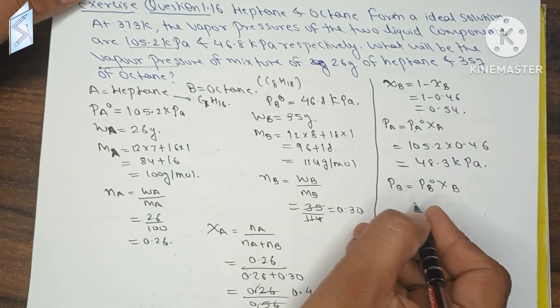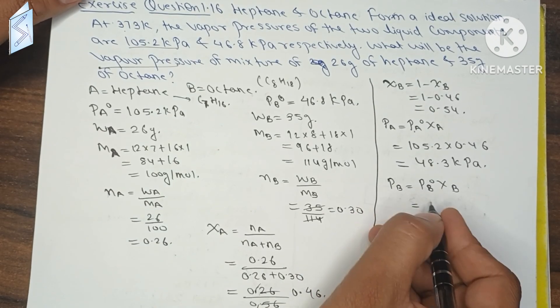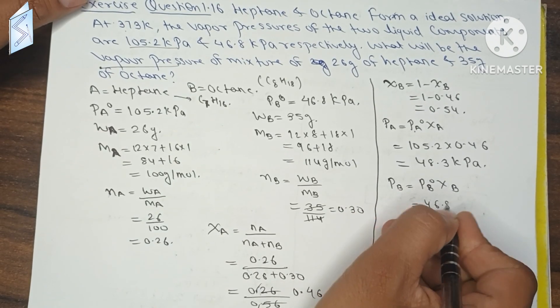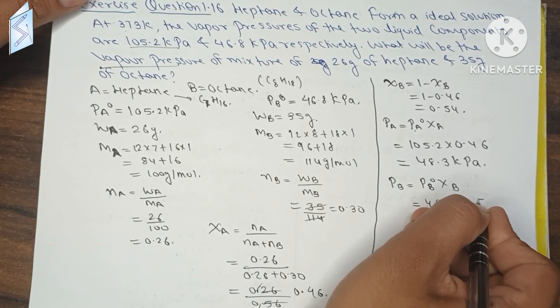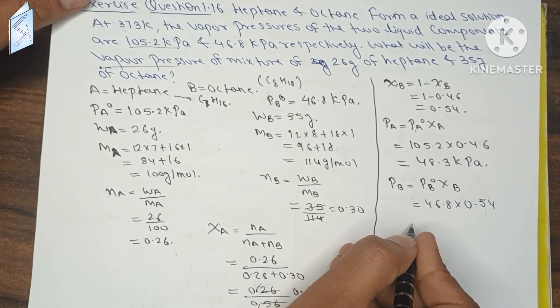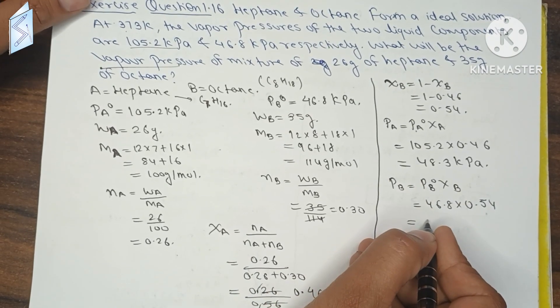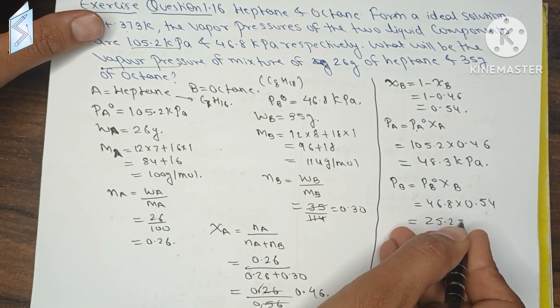PB equals PB0 times XB for ideal solution. So PB0 is 46.8 and XB is 0.54. Multiplying, we get 25.27 kPa.